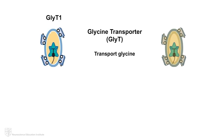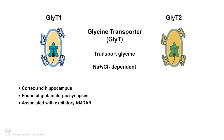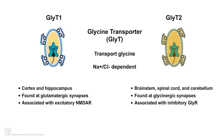Glycine actually has two types of glycine transporters, GlyT1 and GlyT2. Both GlyT1 and GlyT2 are sodium chloride dependent. However, the similarities end there. GlyT1 is found abundantly in the prefrontal cortex and hippocampus and is associated with excitatory NMDAR at glutamatergic synapses. GlyT2 is found in areas of the brainstem, spinal cord, and cerebellum and is associated with inhibitory glycinergic synapses.